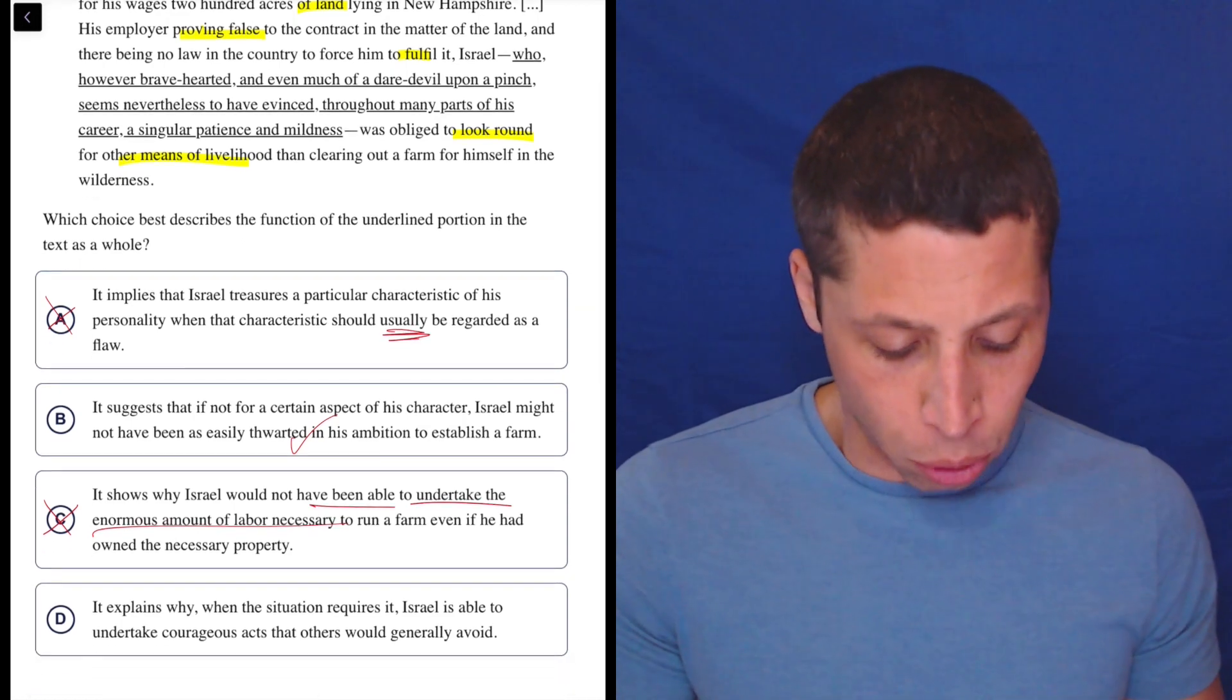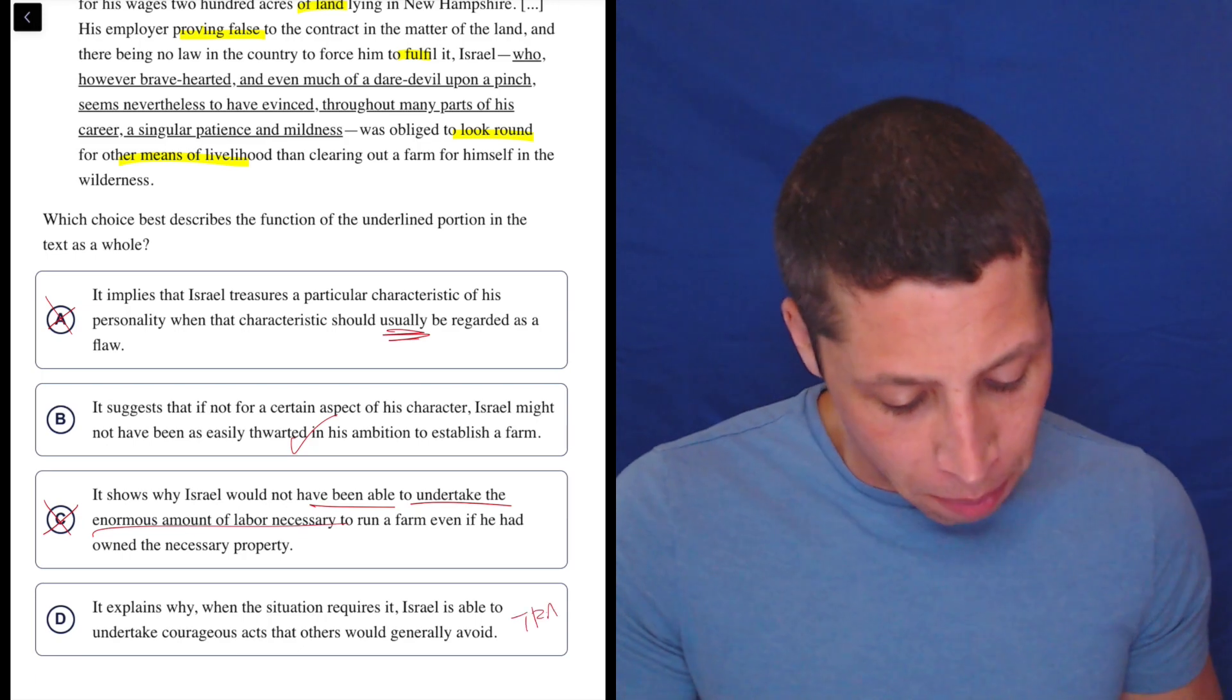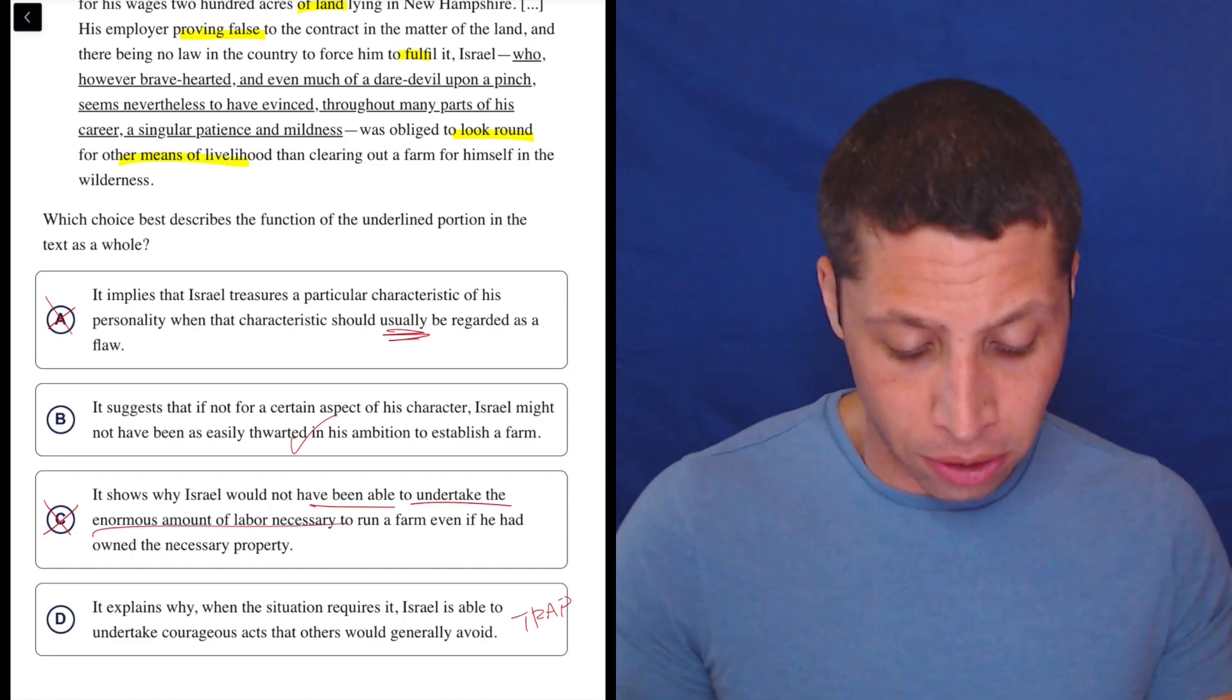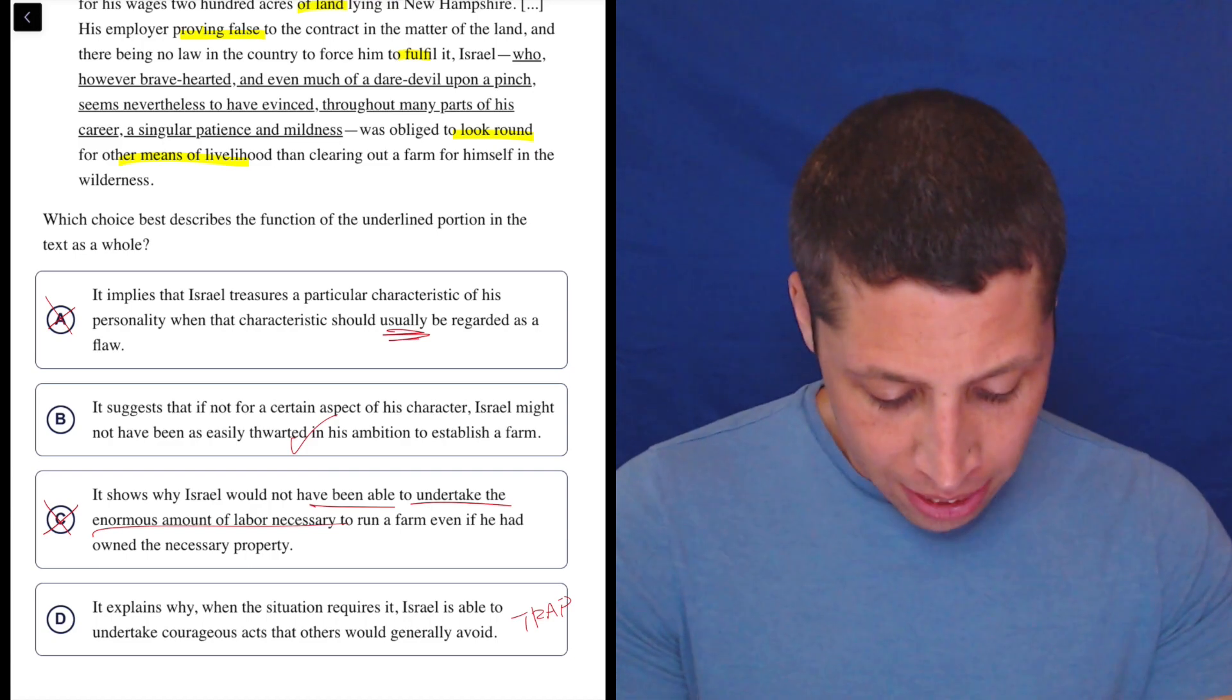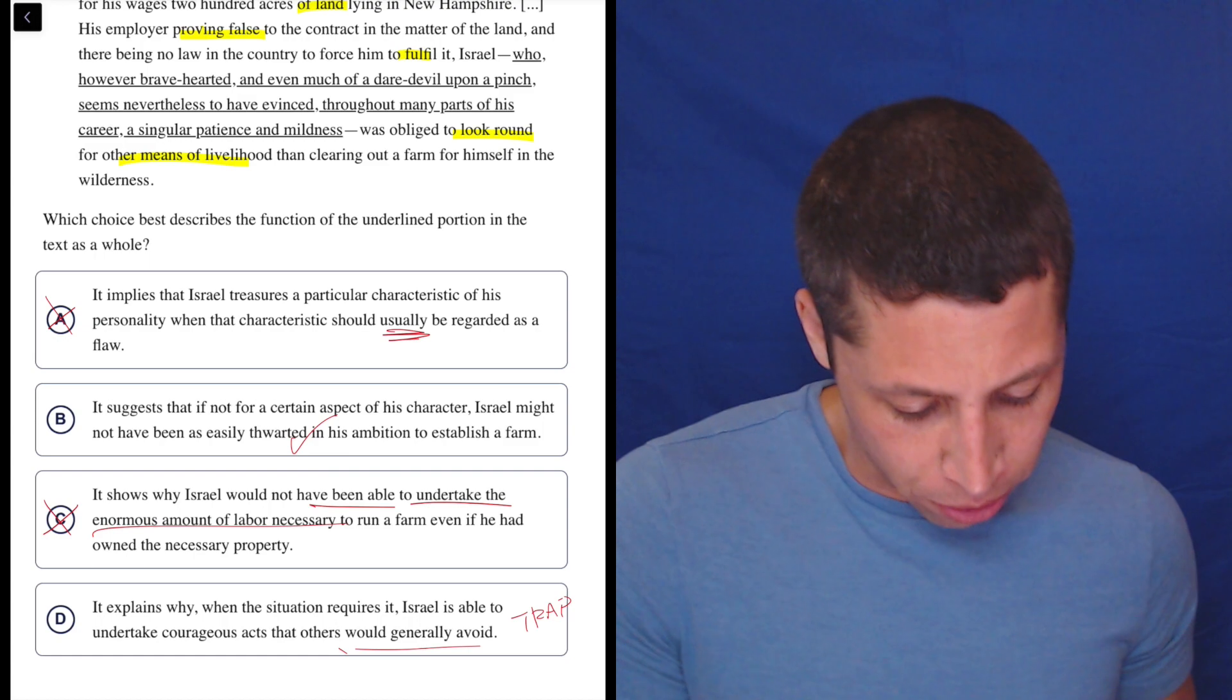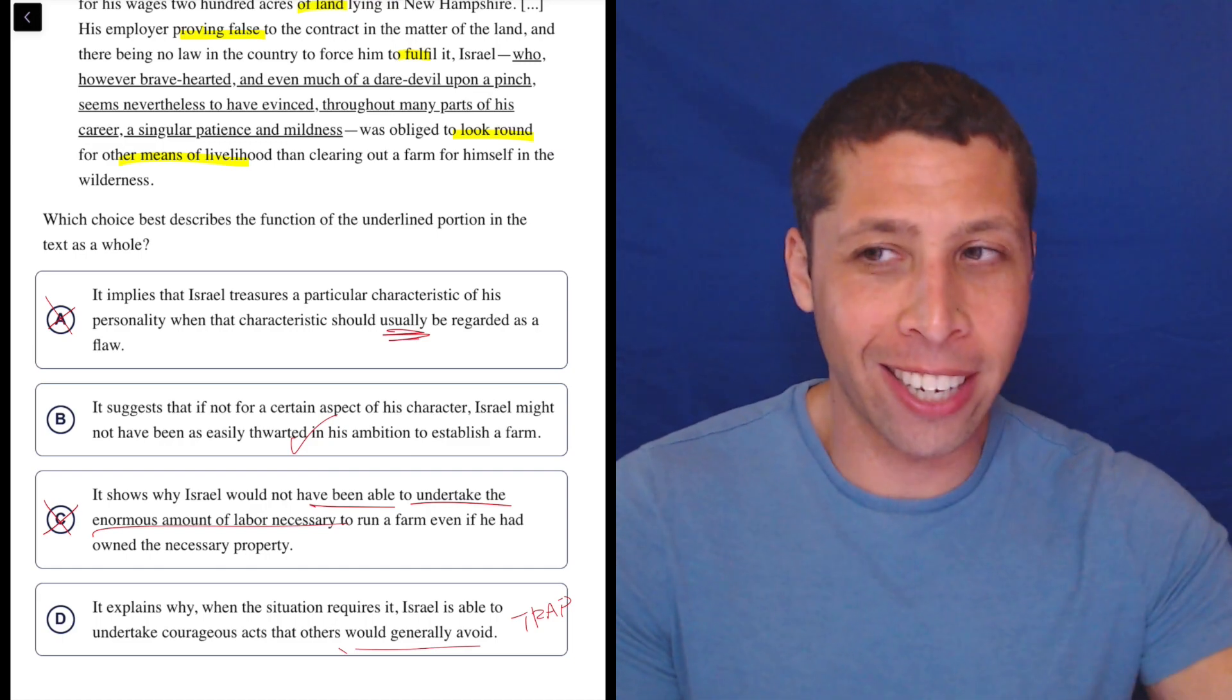D. It explains why when the situation requires it, Israel is able to undertake courageous acts that others would generally avoid. Well, it does say he's bravehearted. So to me, this is the biggest trap because I think a lot of you are going to be confused and just be like, oh, he is bravehearted, brave, courageous. Those words are the same. He's a daredevil, right? That's also maybe implies that he's taking risks and chances and being brave. But he's like, other people wouldn't avoid this. I don't, first of all, I don't know what other people would do. So can't really get into that.